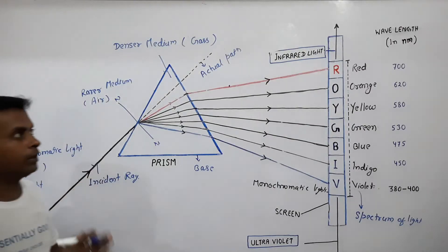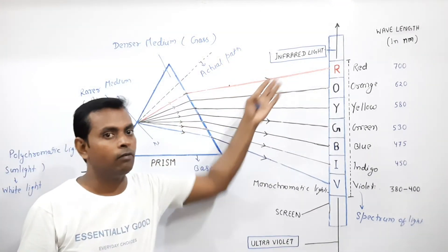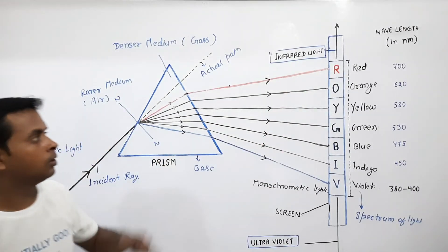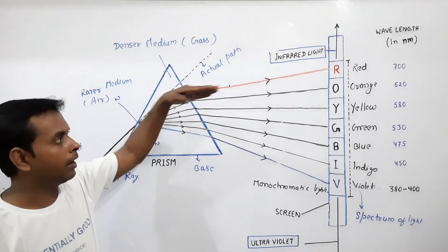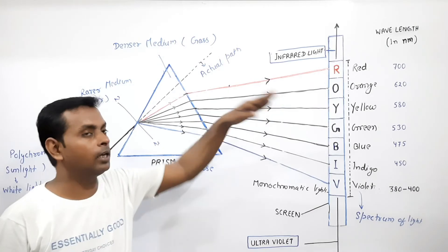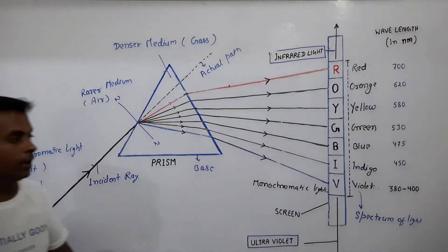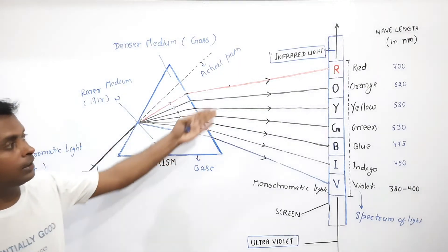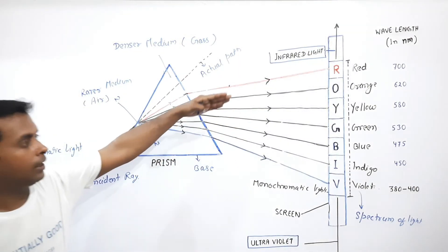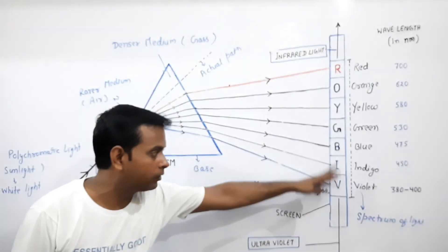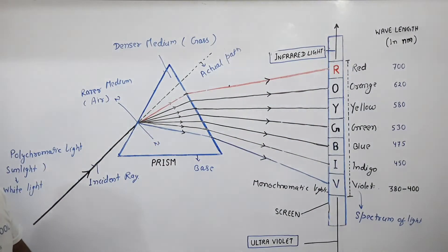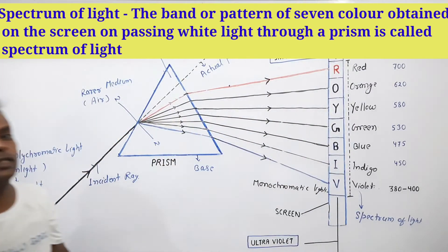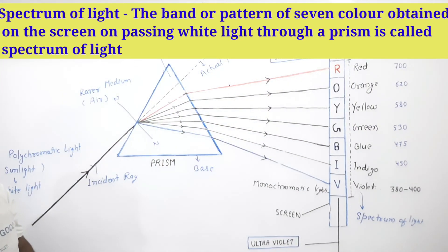Dispersion of different colors totally depends on their corresponding wavelength. Red color has the maximum wavelength, so it deviates the minimum and tends to travel in a straighter path. Violet color has the minimum wavelength, so it deviates the maximum and appears at the base of the spectrum. This band of seven colors is known as the spectrum of light.